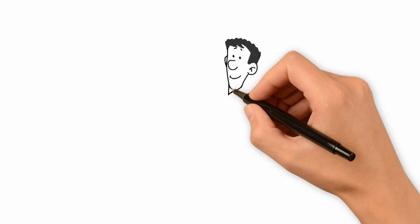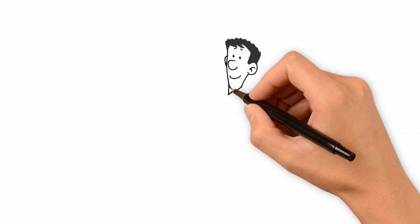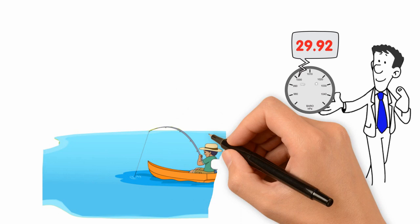As a general rule, we should use a pressure of 29.92 to determine average sea level daytime pressure. Anything above 29.92 is high pressure and anything below 29.92 is low pressure.